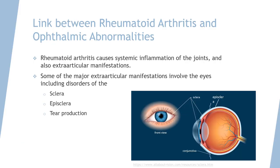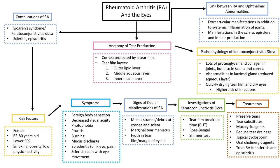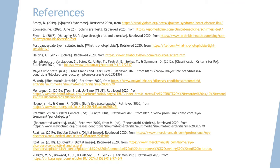For recap, rheumatoid arthritis and ophthalmology are quite closely linked. Rheumatoid arthritis can cause systemic inflammation of the joints and involve the eye as part of extra-articular manifestations. This includes the inflammation of the sclera and the episclera, and also causes keratoconjunctivitis seca by affecting tear production. This is a flowchart summary of everything we've covered today. These are the references for all the resources used to put this presentation together. Thank you for watching this video!